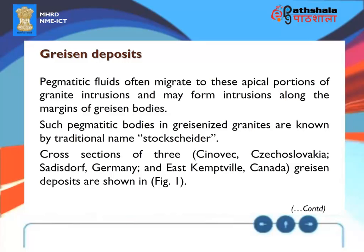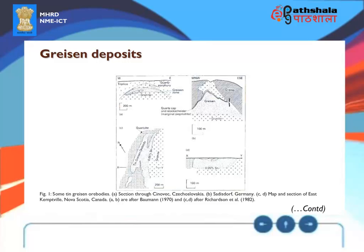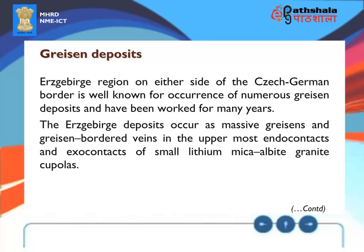Cross sections of three deposits — Cinovec, Czechoslovakia; Sadisdorf, Germany; and East Kemptville, Canada — are shown in Figure 1. The Erzgebirge region on either side of the Czech-German border is well known for the occurrence of numerous greisen deposits and has been worked for many years. The Erzgebirge deposits occur as massive greisens and greisen-bordered veins in the uppermost endocontacts and exocontacts of small lithium mica-albite granite cupolas.